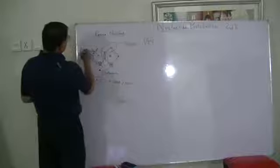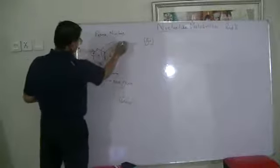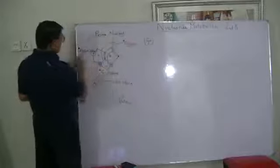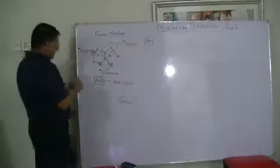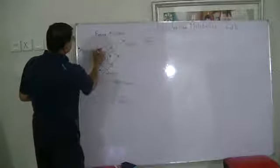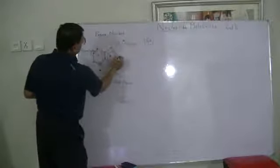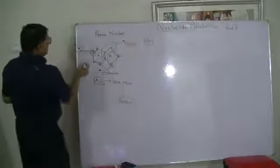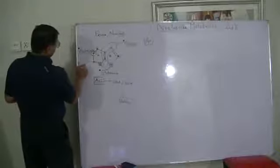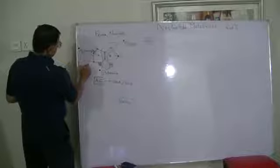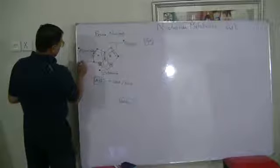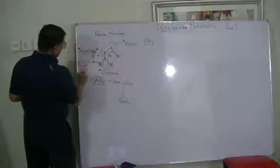So there are three amino acids involved: glycine, which forms C4, C5, and N7; glutamine, which provides N3 and N9; and aspartate at nitrogen position N1. Now, the remaining carbons — this carbon and this carbon — are provided by formyl tetrahydrofolate.